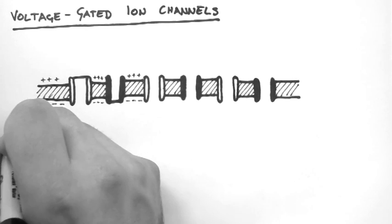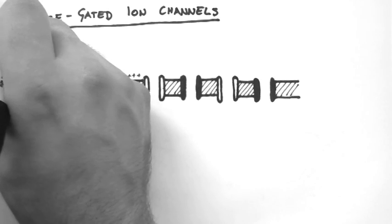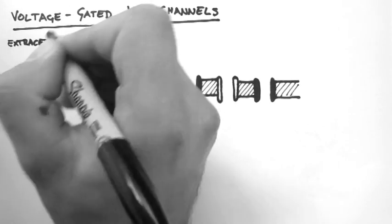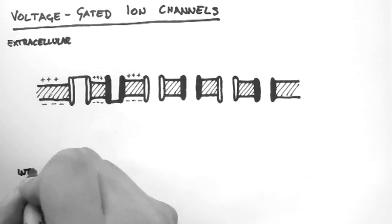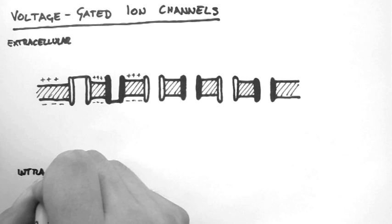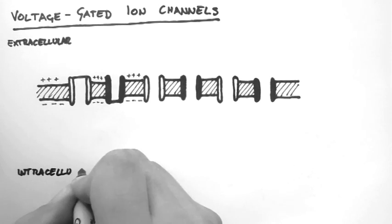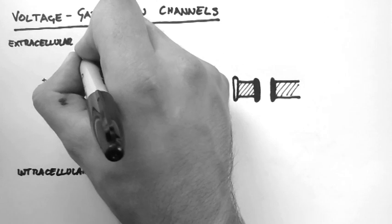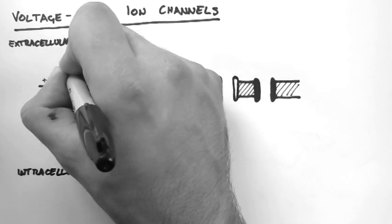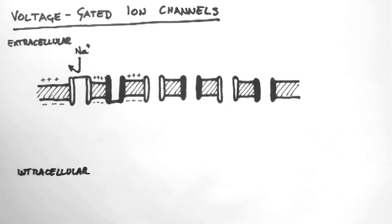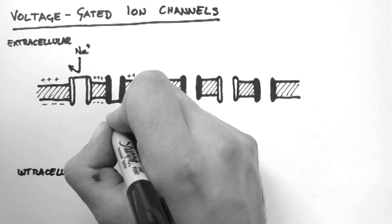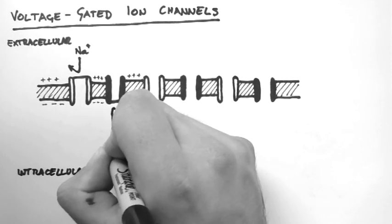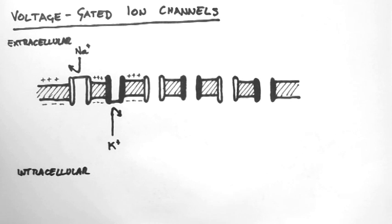This is the outside of the cell or the extracellular environment, and this is the inside of the cell or intracellular. Remember in the last tutorial we said that sodium wanted to move this way but couldn't, and potassium the other way. Well they still can't because their channels are closed.